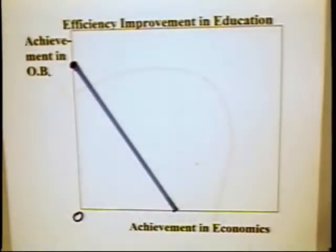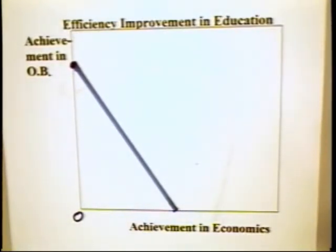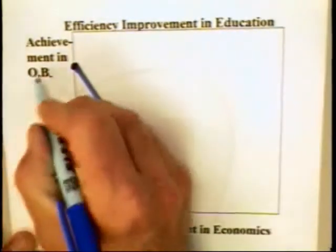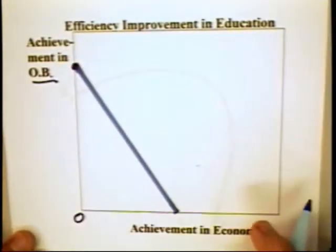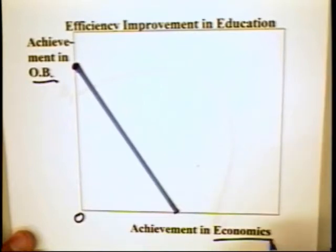In order to illustrate the problems of choice under constraint, economists often use something called a production possibility curve or a consumption possibility curve. Here we have a world in which we have an individual student taking two courses — organizational behavior on the one hand and economics on the other.